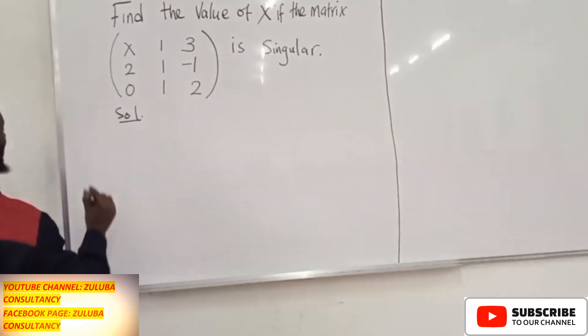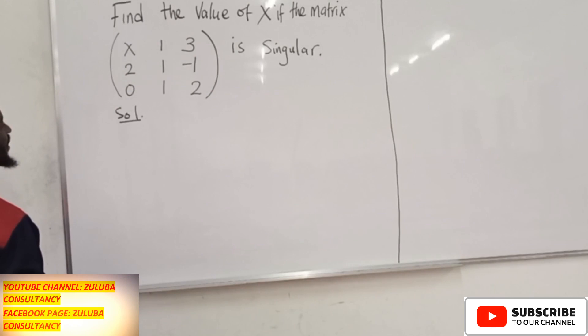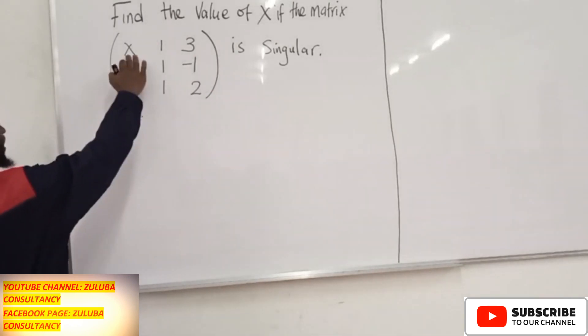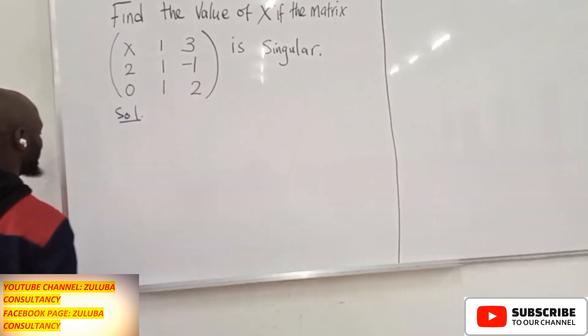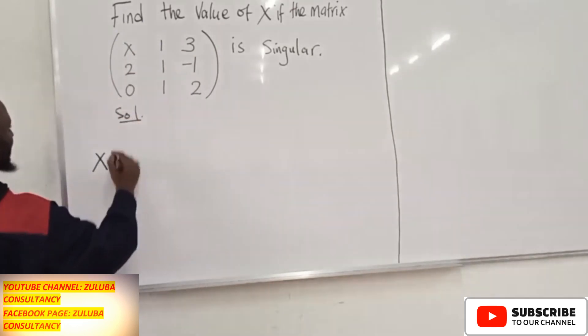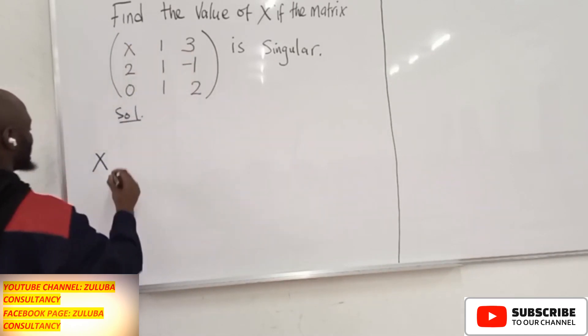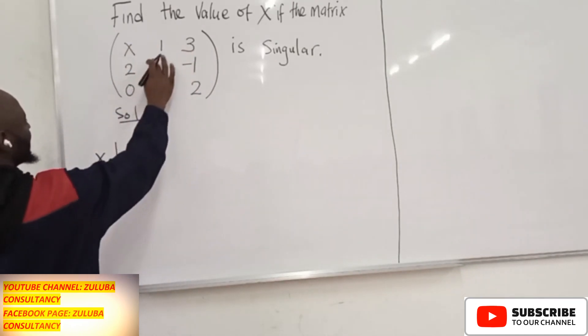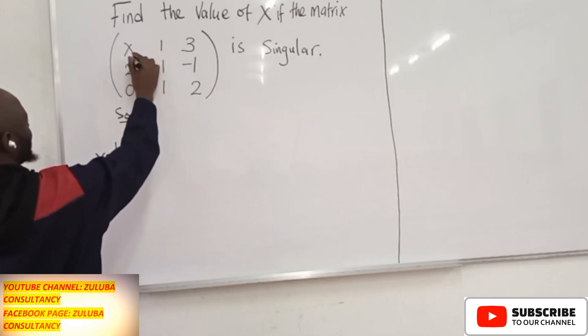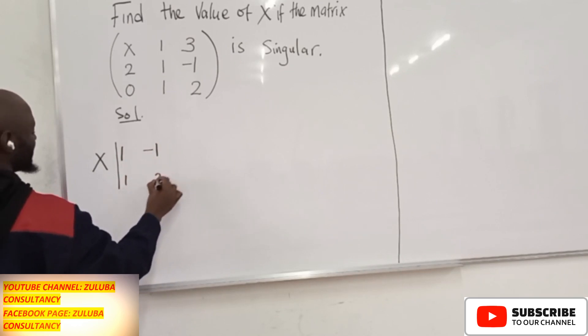If you are looking for the determinant, you have to change this matrix from 3 by 3 to 2 by 2, but you will be factoring out these positions. If you look at position number X, this one here, you will try to delete the column and the row. You will remain with these entries here. You will remain with 1, minus 1, 1, 2.